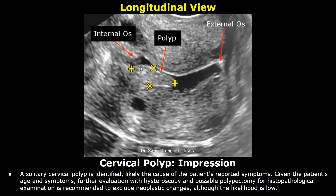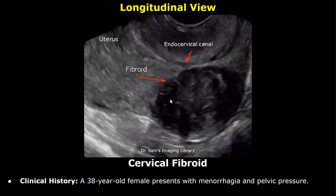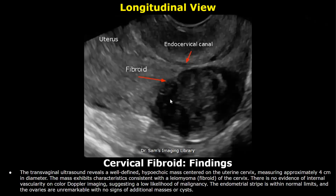This is a case of cervical fibroid. Clinical history: a 38-year-old female presents with menorrhagia and pelvic pressure. Findings: transvaginal ultrasound reveals a well-defined hypoechoic mass centered on the uterine cervix, measuring approximately 4 centimeters in diameter.